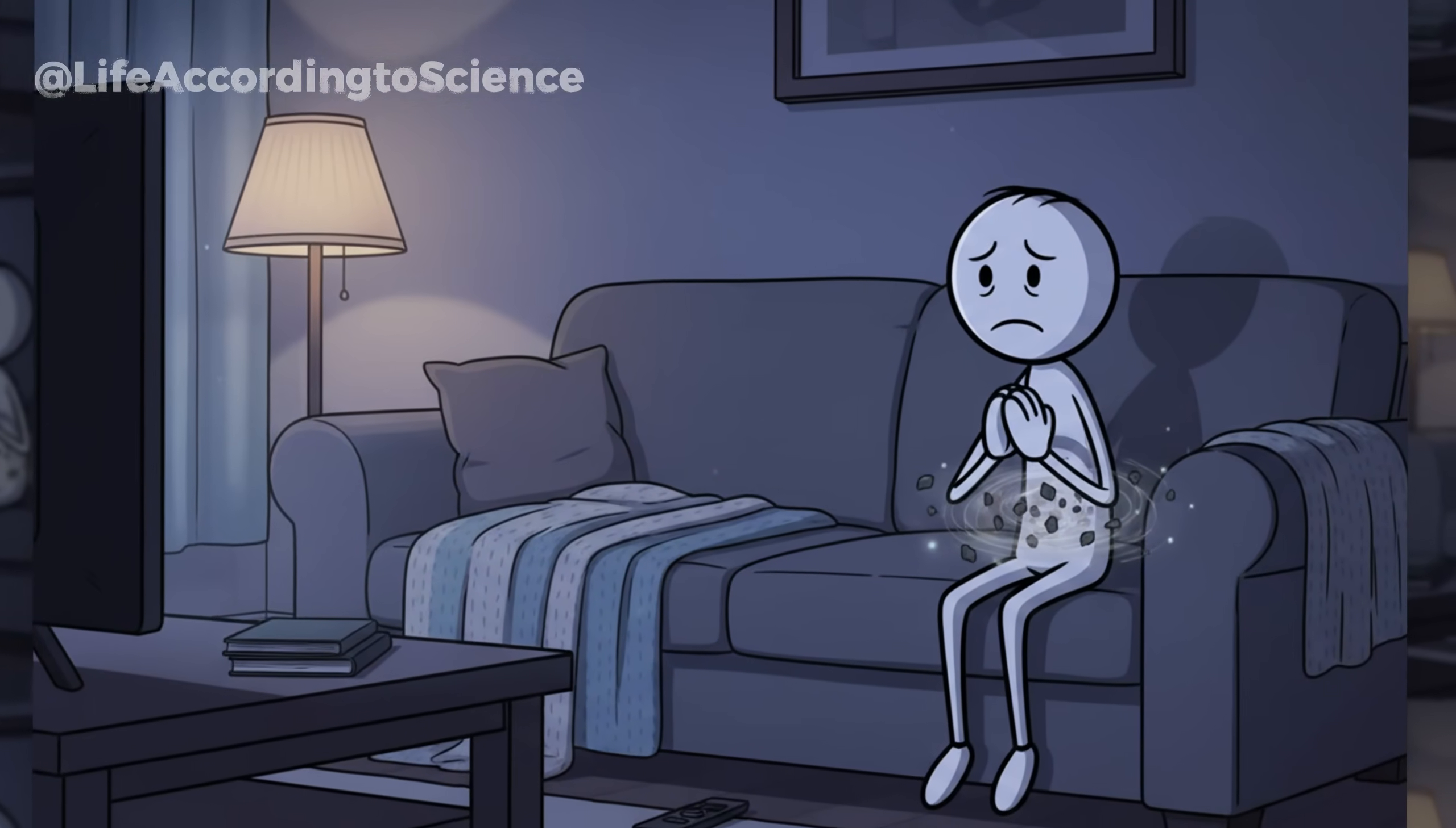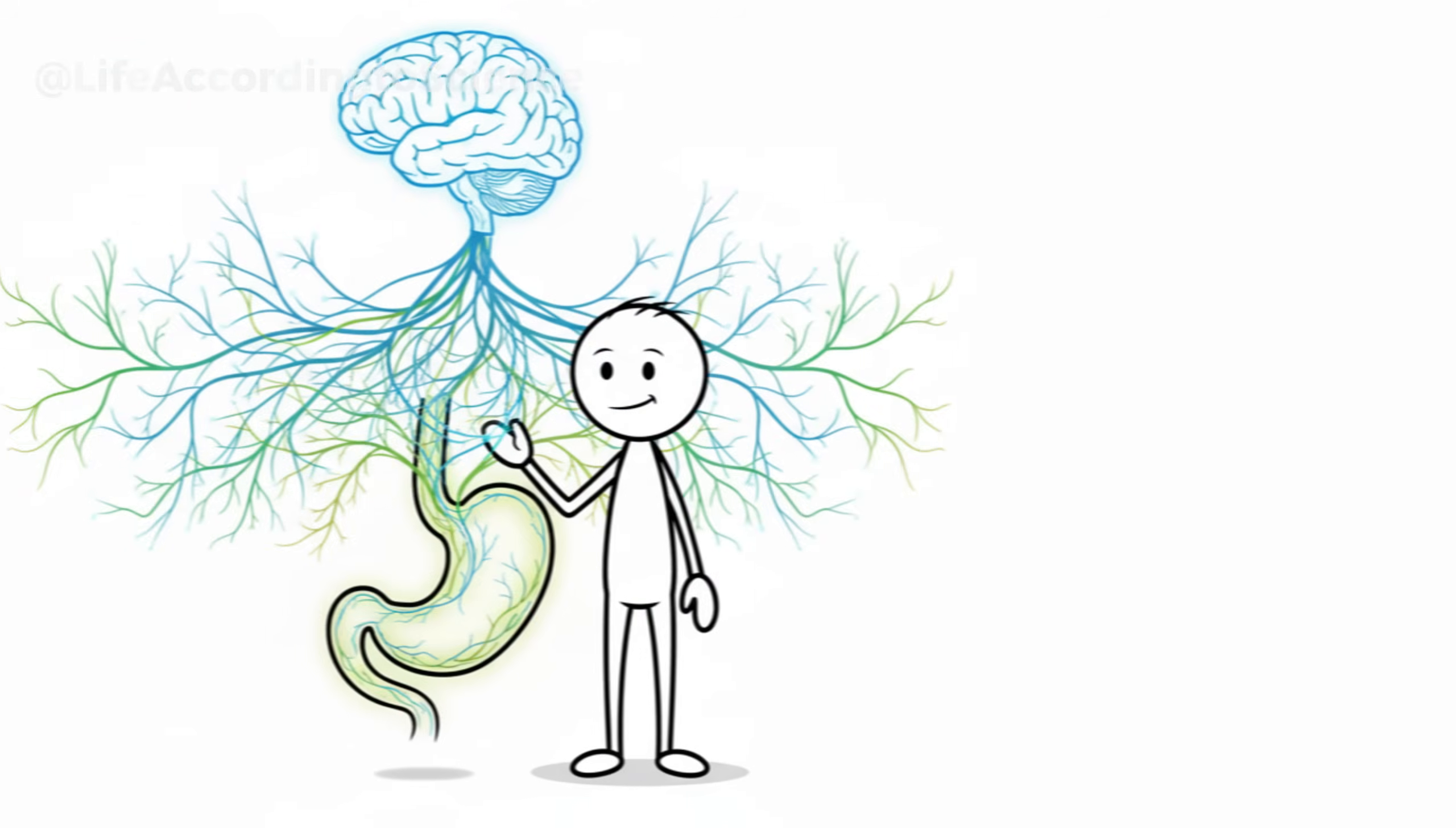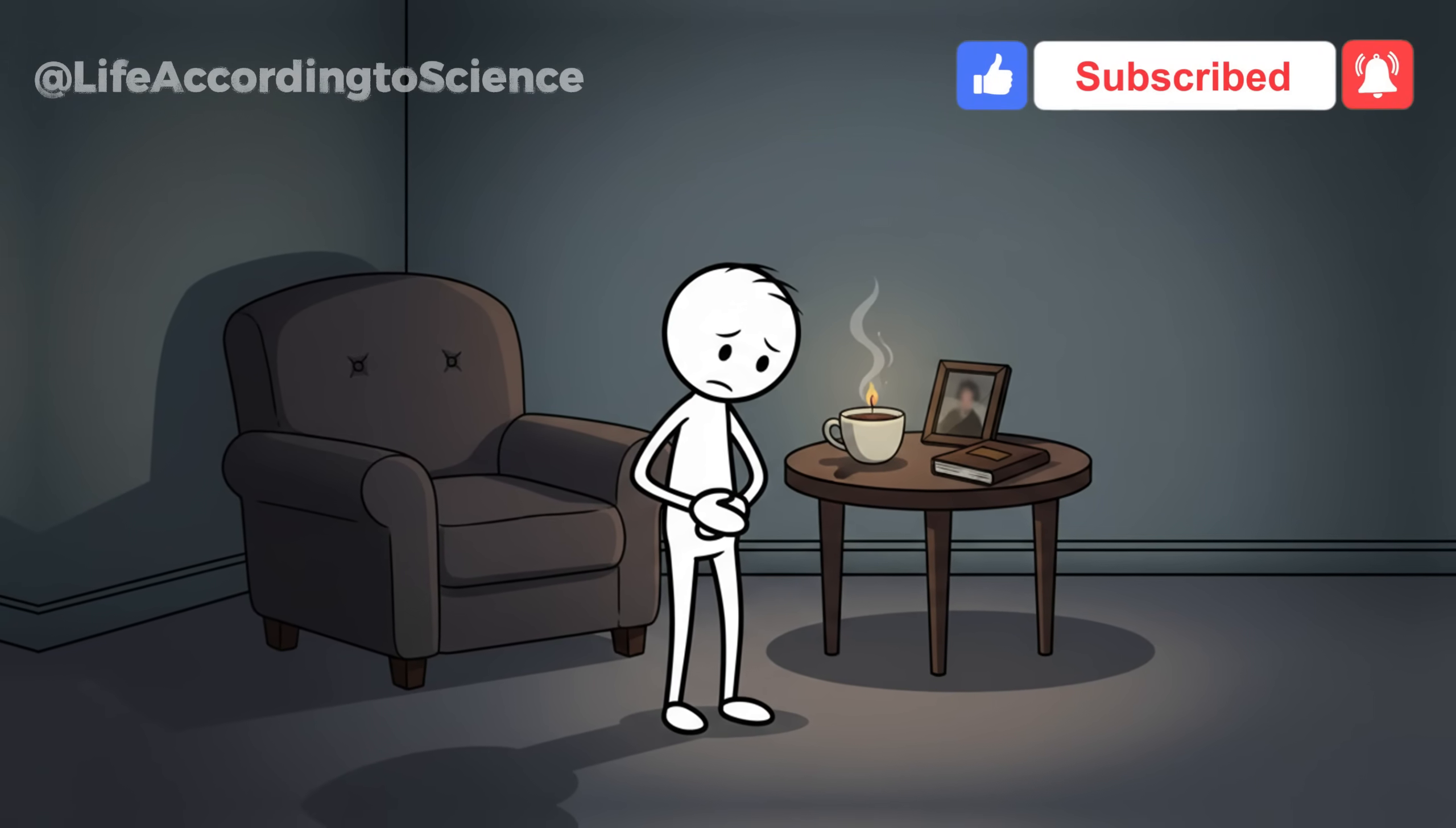This hormonal cocktail tells your body to store energy. And where does it store it first? Around the organs. Belly fat becomes your body's emotional armor, a literal buffer between you and the world. In neuroscience, this connection is called the gut-brain axis, and it's no metaphor. Your intestines are lined with over 100 million neurons, constantly communicating with your brain through the vagus nerve. When you're tense or emotionally overloaded, digestion slows, inflammation rises, and your metabolism suffers.